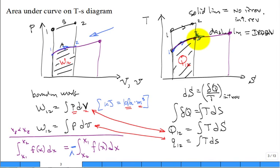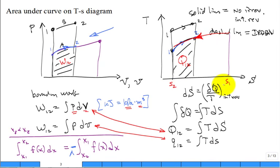On the TS diagram, going right means heat coming in and entropy increasing. Going left means heat transfer out with entropy decreasing. We'll apply both directions when we talk about cycles, where the process traces a complete loop on both PV and TS diagrams, using area under curves to interpret work and heat transfer.